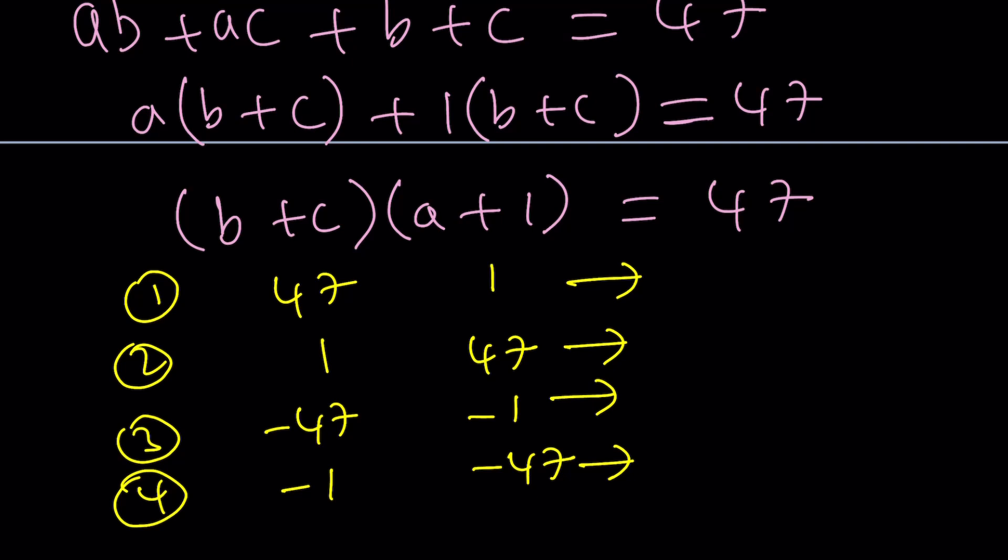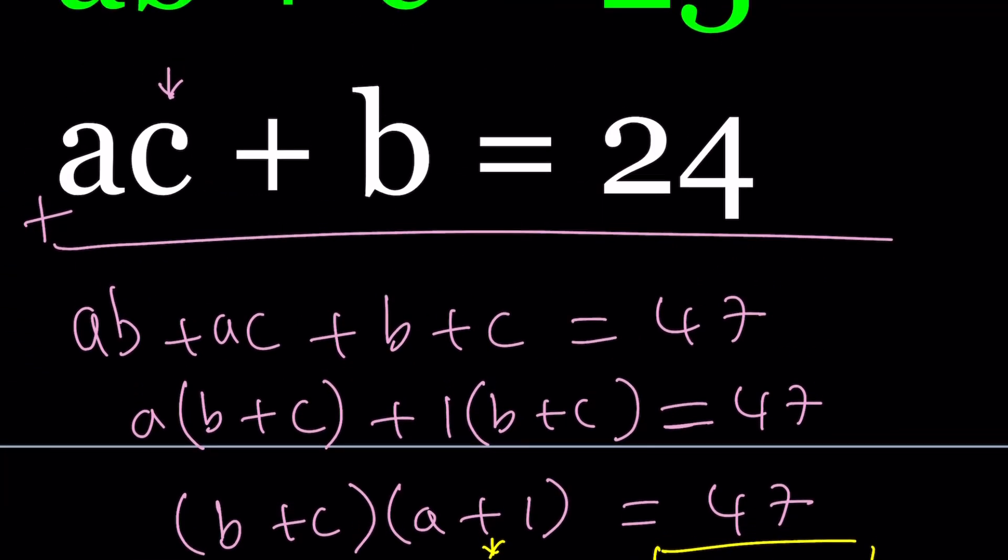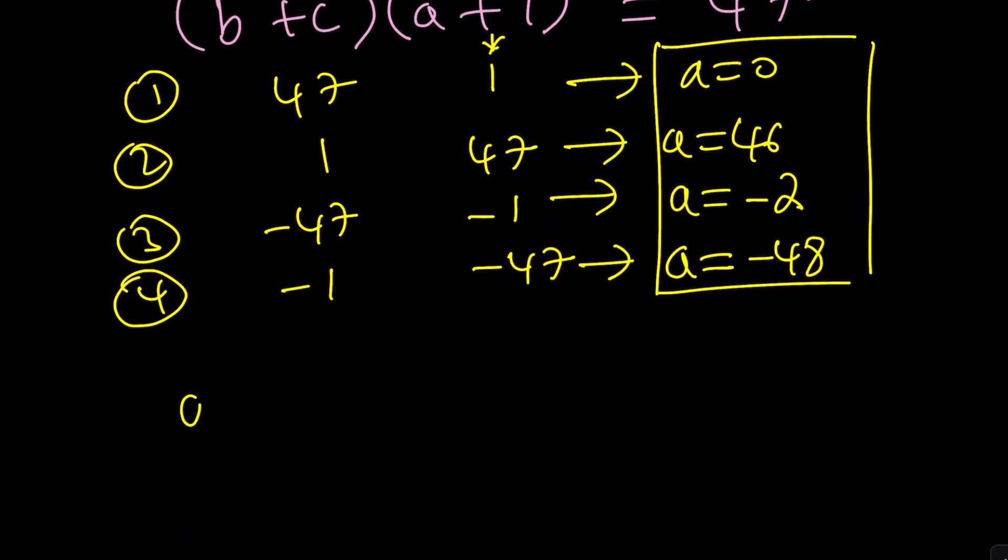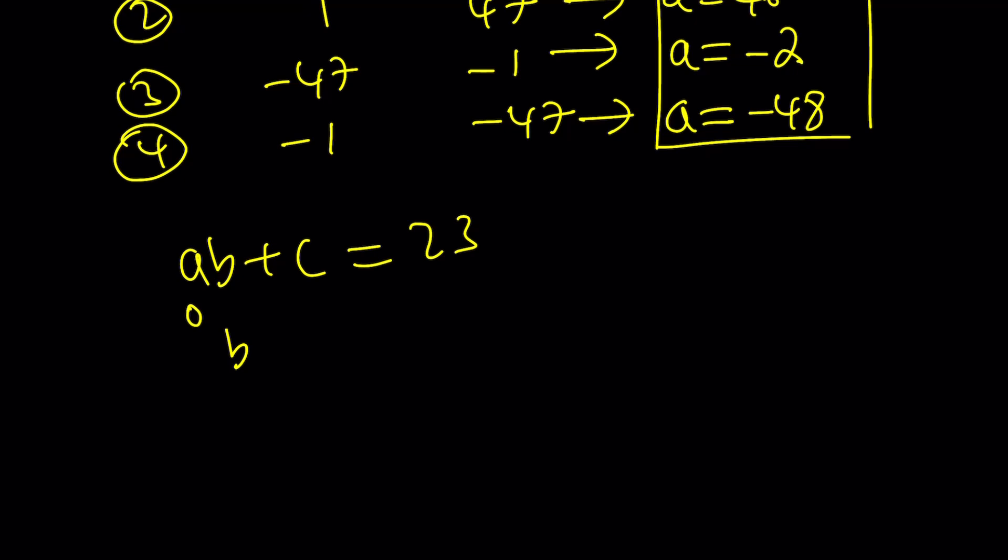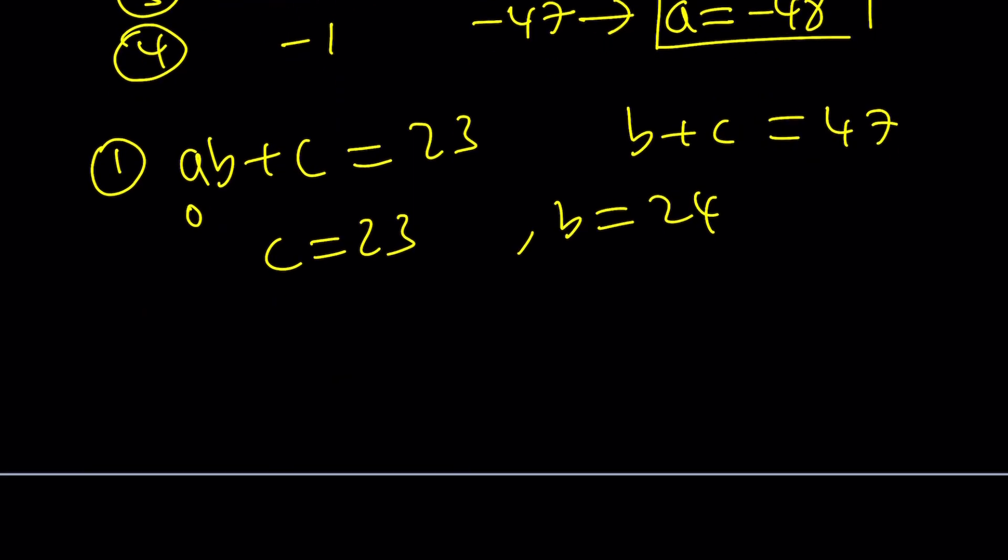So if A plus one is equal to one, as you can see here, then A is going to be zero. From here A is going to be 46. From here A is going to be negative 2. And from the last one, A is going to be negative 48. Now we're going to go ahead and plug these A values along with the B plus C values. We're going to come up with another system and we'll check the results. Let's just use the first equation because the number is smaller. AB plus C is 23. And now if A is zero, notice that if A is zero, we get B times zero, which is zero. So we get C equals 23 from here. But if C is 23 and B plus C is 47, then we do know that B is equal to 24. So what does that mean? It just means that zero comma 24 comma 23 is a solution. It's an ordered triple that satisfies the original equation. Case one closed.